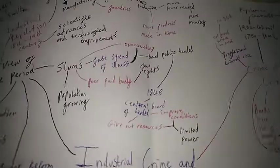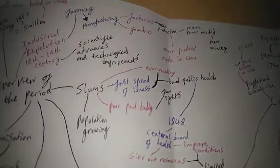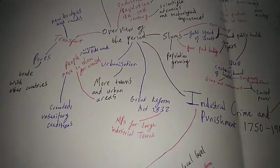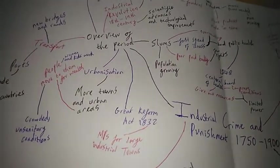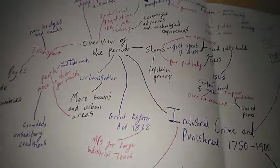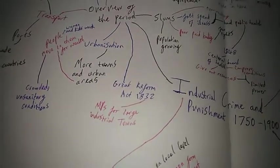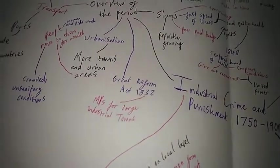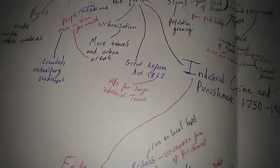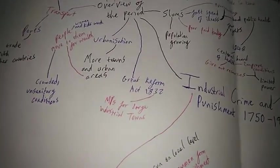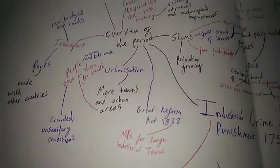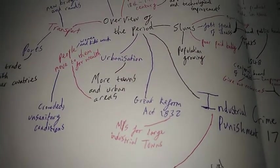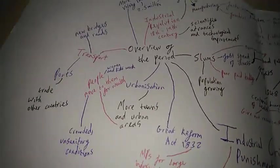The Great Reform Act in 1832 was about representation of different people around the country. Every large industrial town was given an MP which was their voice on the national scale. It was branching out from London.